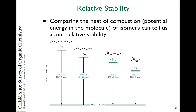Where this becomes useful is when we compare molecules that are isomers of each other. If you take a look at octane and three of its isomers — 2-methylheptane, 2,2-dimethylhexane, and 2,2,3,3-tetramethylbutane — these all have the same molecular formula and mass. However, when burned in air, the energy released for each isomer is different. The more branched molecules are lower in energy and more stable, releasing less energy. Linear alkanes are actually higher in energy or less stable than more branched alkanes.